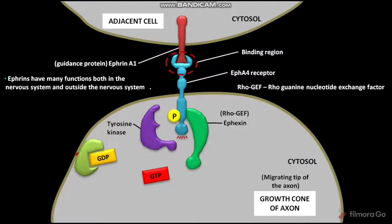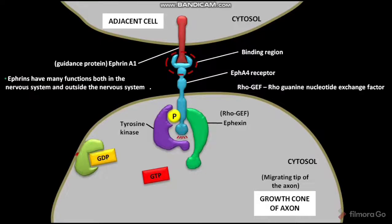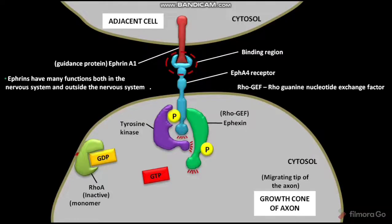The phosphotyrosine on the activated EPH-A4 receptor then recruits a cytosolic inactive tyrosine kinase and activates it. The active tyrosine kinase then phosphorylates a tyrosine amino acid on the Afaxin. Due to this phosphorylation, the Afaxin becomes active. In the growth cone, a membrane-bound protein called Rho-A is present in its inactive conformation in a GDP-bound state. Rho-A is a monomeric GTPase.